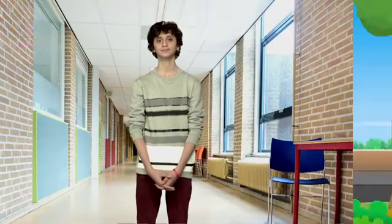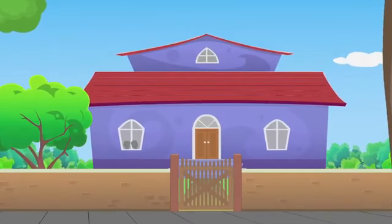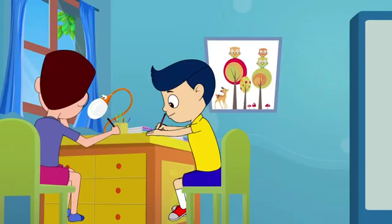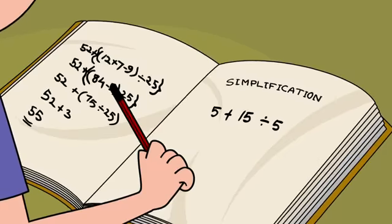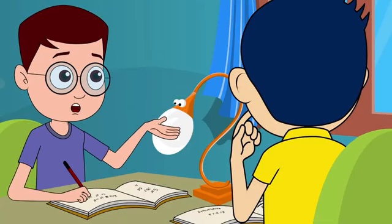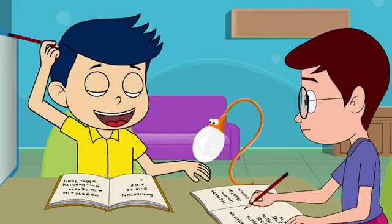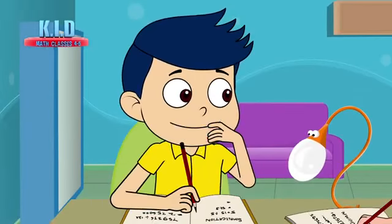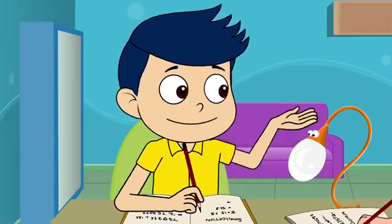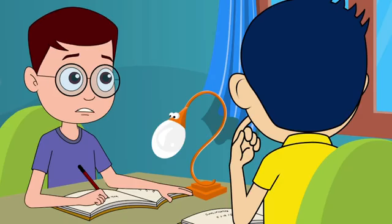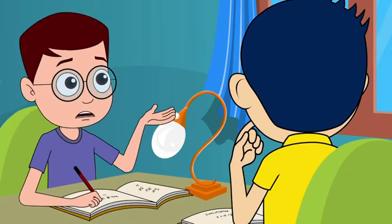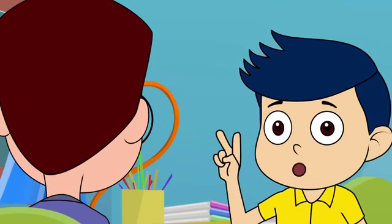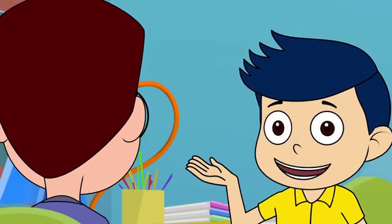Kabir and Bunty are also solving some complex problem. Let us figure out what is happening there. Today's homework looks quite tough. It seems like the only thing simple about simplification is the name. Simplification is actually pretty complicated. I really wish I understood how simplification works, and we have just two days to finish this pile of homework. How are we going to do it?